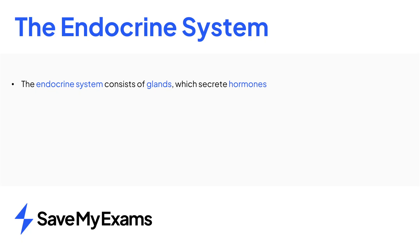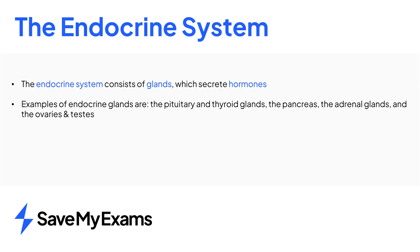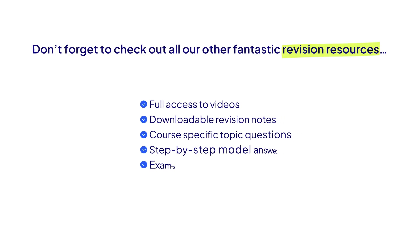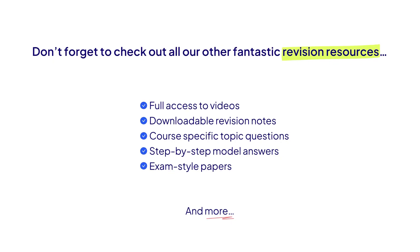In summary, the endocrine system is made up of the glands of the human body, which secrete hormones. Some examples include the pituitary and thyroid glands, the pancreas, the adrenal glands, and the ovaries and testes. The hormones they secrete are chemical messengers that travel in the blood to specific target cells, where they bind to receptors and bring about a response. Don't forget to check out all the other fantastic revision resources at Save My Exams.